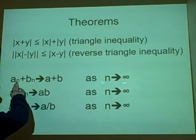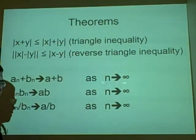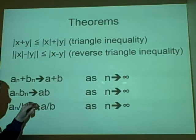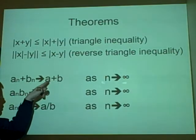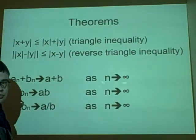Right, so a_n plus b_n, where a_n and b_n are both sequences, go towards a plus b as n goes to infinity.